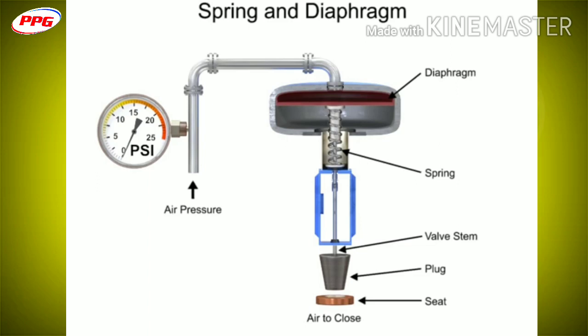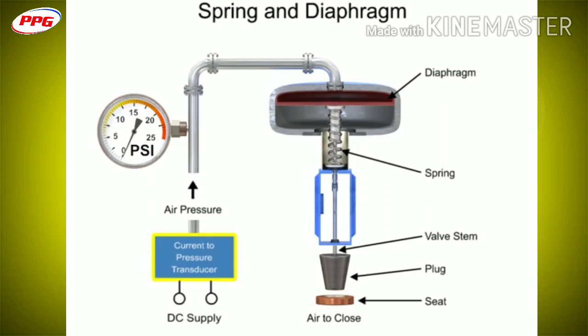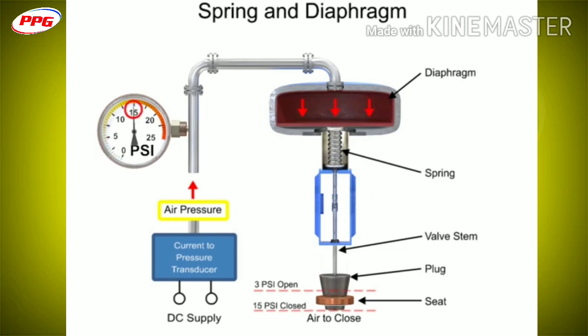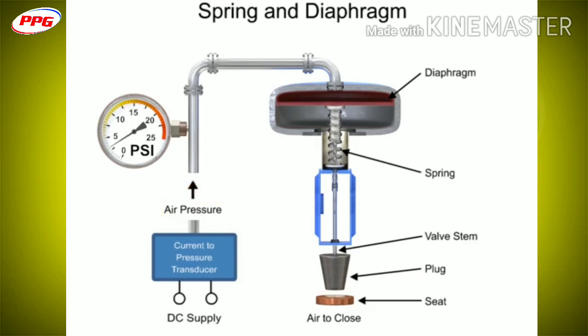To vary the position of the restrictor and flow through the valve, a current to pressure transducer can be used to provide a 3 to 15 PSI signal to the diaphragm. At 3 PSI, the valve is maintained open, and at 15 PSI, the valve is maintained closed. Pressures between the 3 to 15 PSI range proportionally change the flow of the valve.